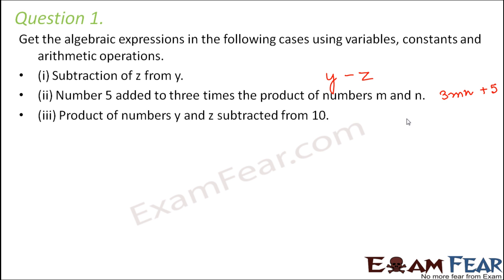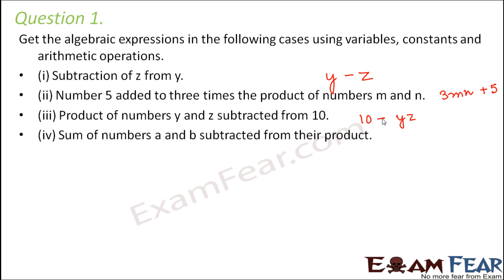Product of numbers y and z subtracted from 10: the product of y and z is yz, and this is subtracted from 10, giving 10 minus yz. Sum of numbers a and b subtracted from their product: the sum is a plus b, and the product is ab, so the expression is ab minus (a plus b).